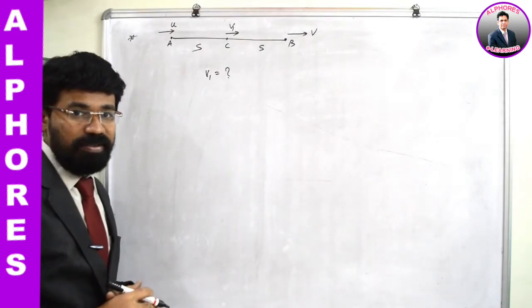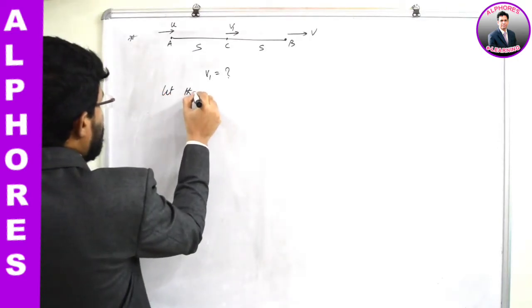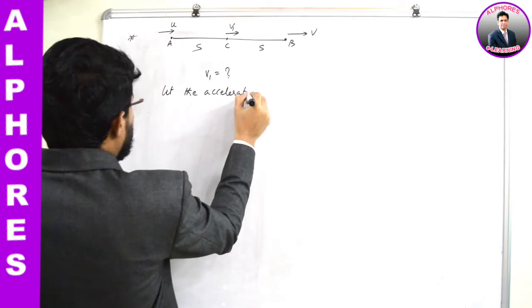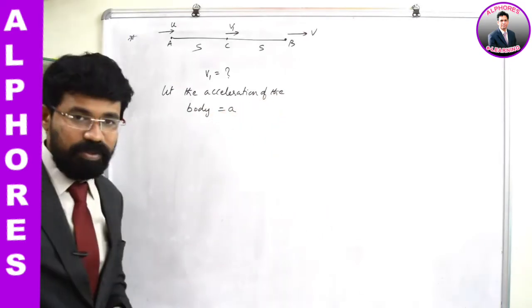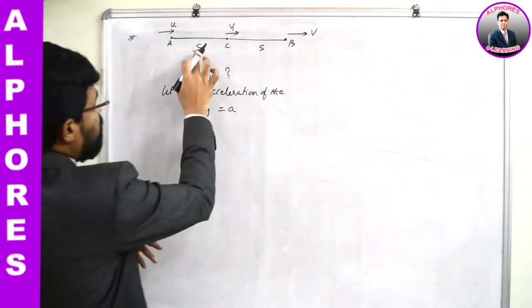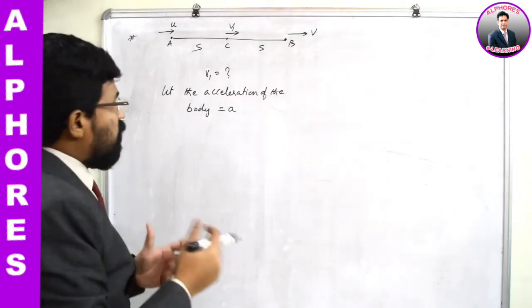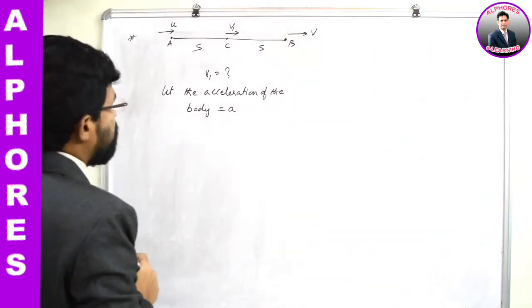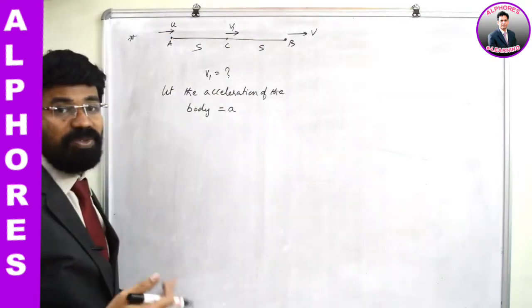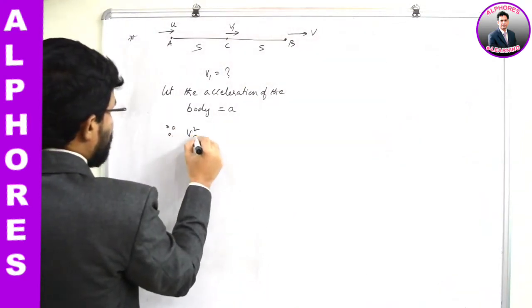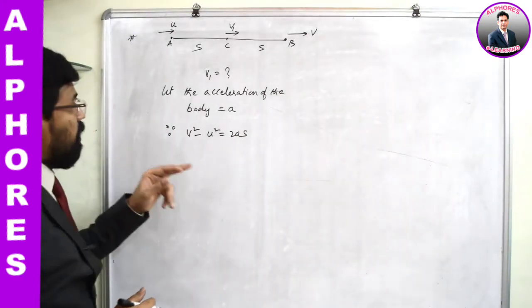There is no time-related data here. We do not have any time-related data. All that is known is that this object is travelling with uniform acceleration — let the acceleration of the body equal A. We have only details about distance of separation and velocity at A and velocity at B. So the appropriate equation to use here is the one in terms of distance, u, and v: v² - u² = 2as.